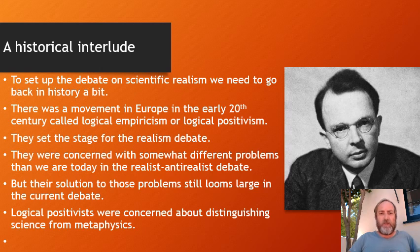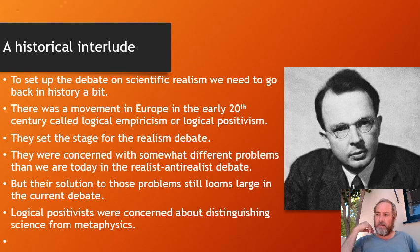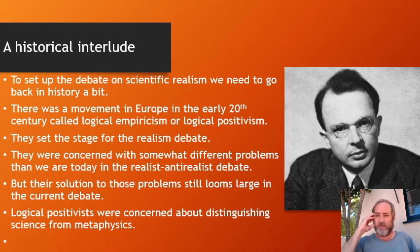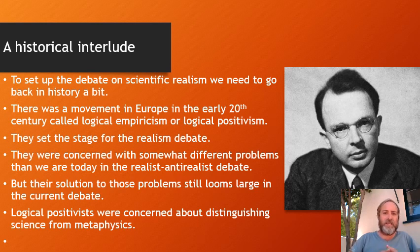To set up the debate on scientific realism, it's helpful to go back in history a little bit. Over here on our right is Rudolf Carnap, an important figure in logical empiricism. He started out in Vienna and was a member of what was called the Vienna Circle — a group of philosophers and scientists that developed this view of philosophy of science. He ended up in the U.S. before World War II, as things got very difficult, particularly if you were Jewish. He ended up at UCLA.